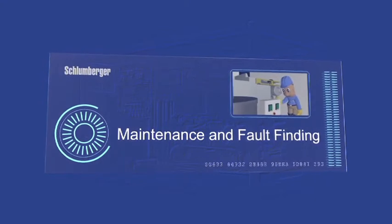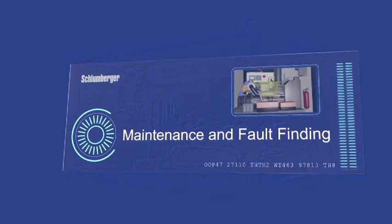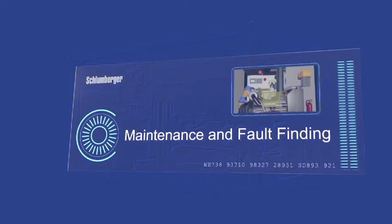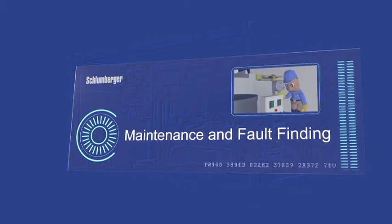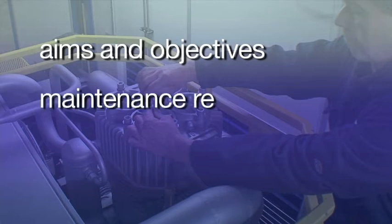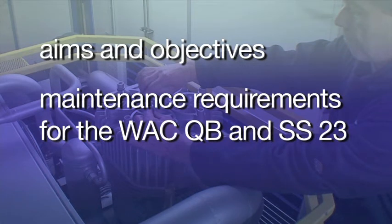Welcome to the third module in your Schlumberger training video for the WAC-QB and WAC-SS23. Having looked at an overview of the fabric and configuration of the WAC-QB and SS23, you will now learn more about maintenance schedules. The aim of this module is to provide you with an overview of maintenance requirements for the WAC-QB and SS23 compressor units, so that you can continue to experience the reliability and consistent operation these units have been designed to deliver.